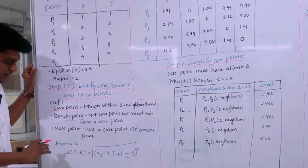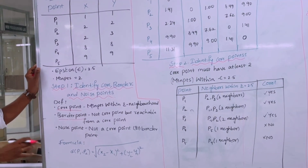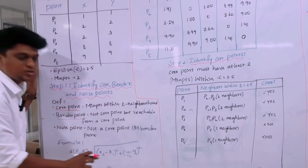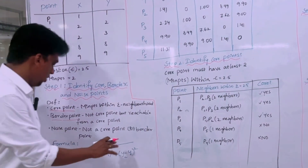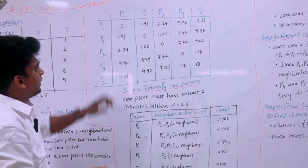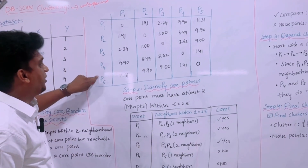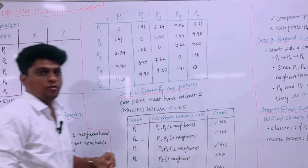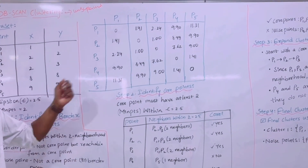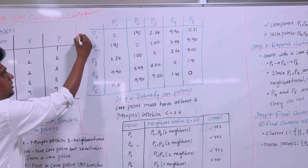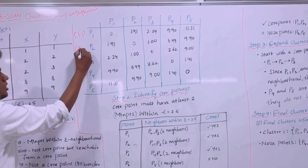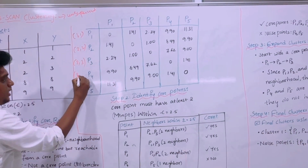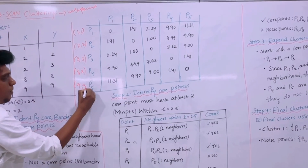We write the Euclidean distance formula: the distance between two points is the square root of (x2 − x1)² + (y2 − y1)². We then design a table with rows and columns labeled P1 through P5 to find the distances between all pairs of points. The coordinates are: P1=(1,1), P2=(2,2), P3=(2,3), P4=(8,8), P5=(9,9).